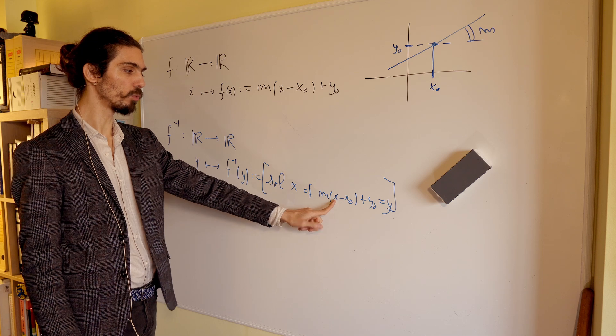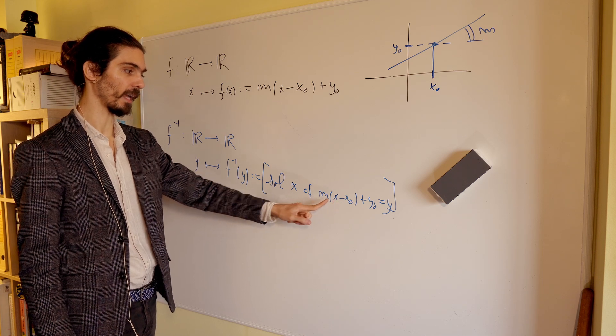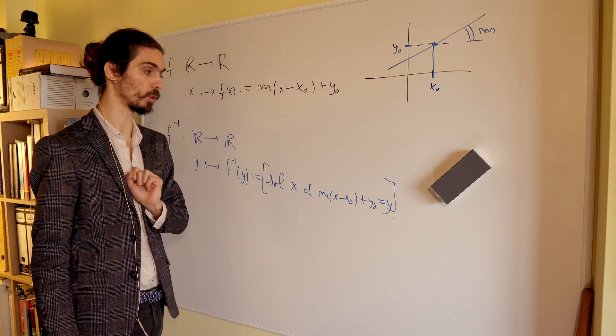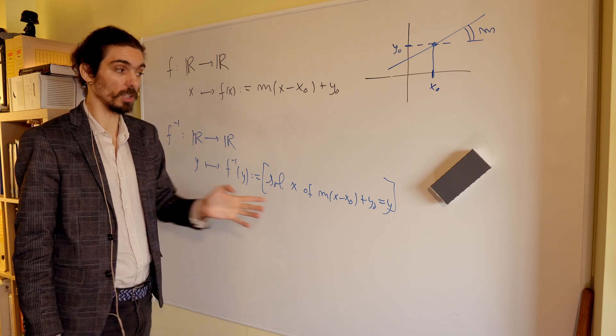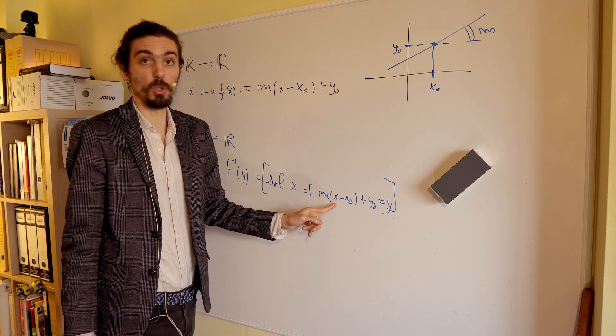Again, the unknown here is just x. m, x0, y0 are numbers that you already specified, so everything is fine. y is the input, so it's fixed, so you just have x.